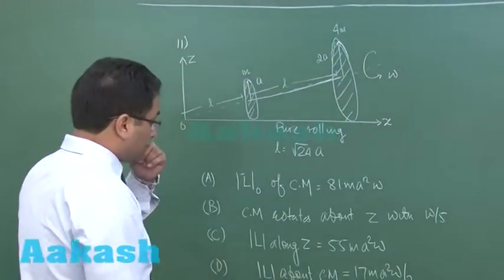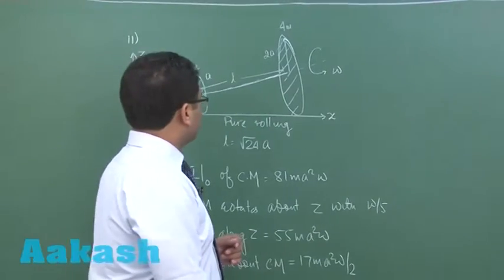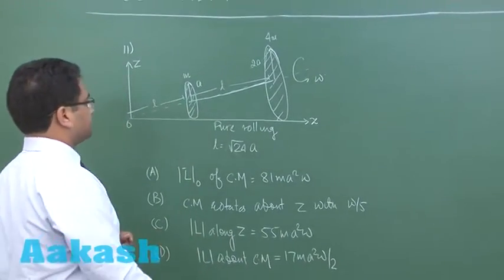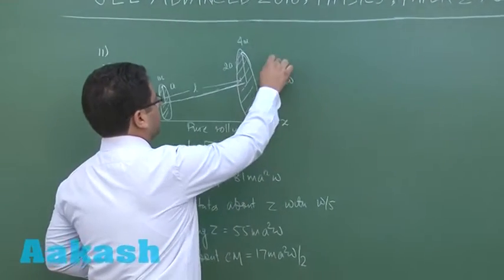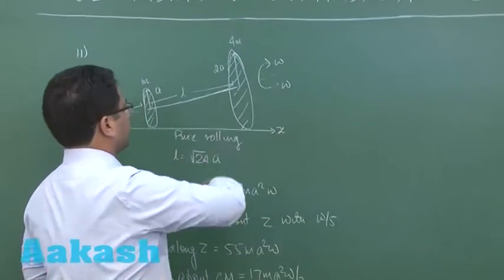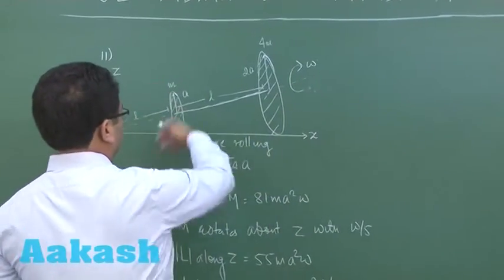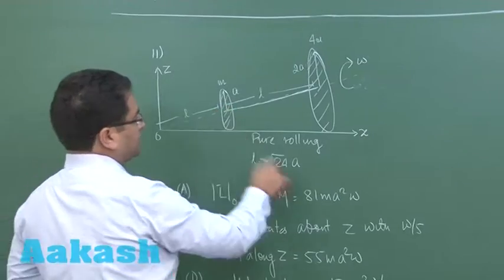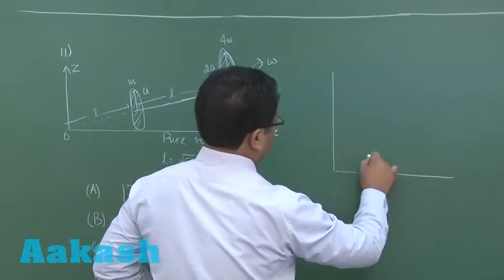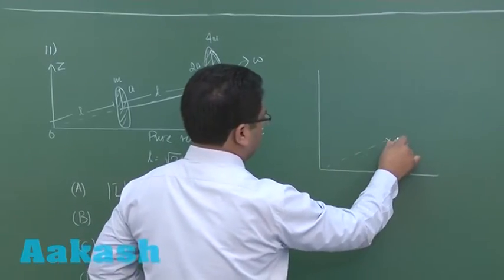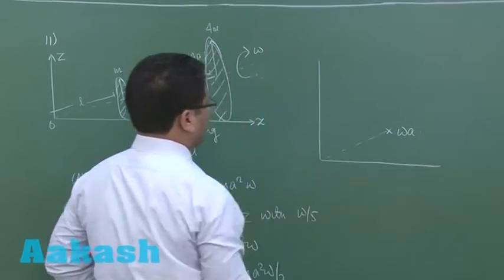Now we need to calculate all these things. Beforehand, if you see, since it is rolling without slipping, this omega is in this particular direction—it is going inward. So the velocity of the center of mass, if you concentrate here, the center of mass is going inward with the velocity omega times A.